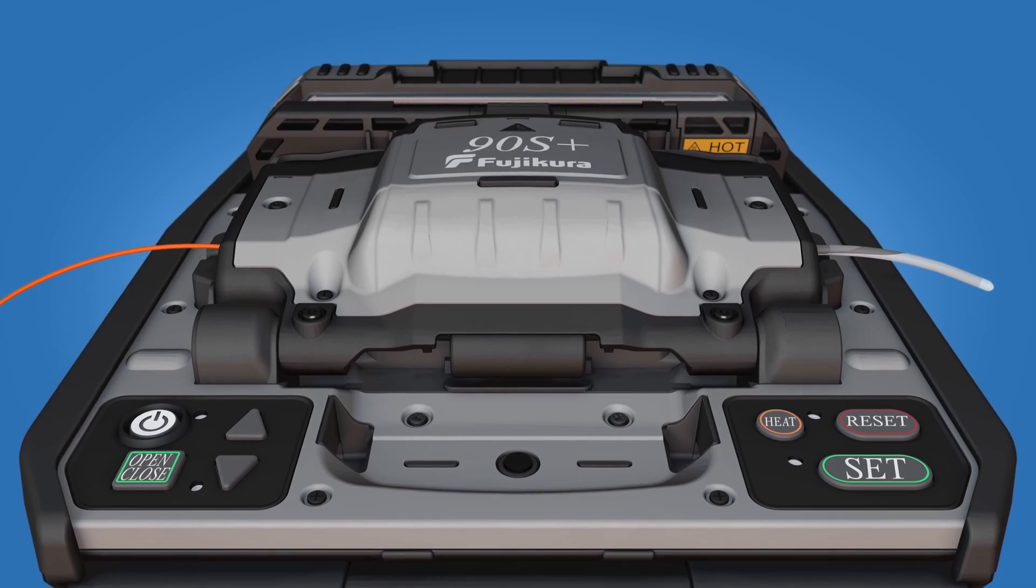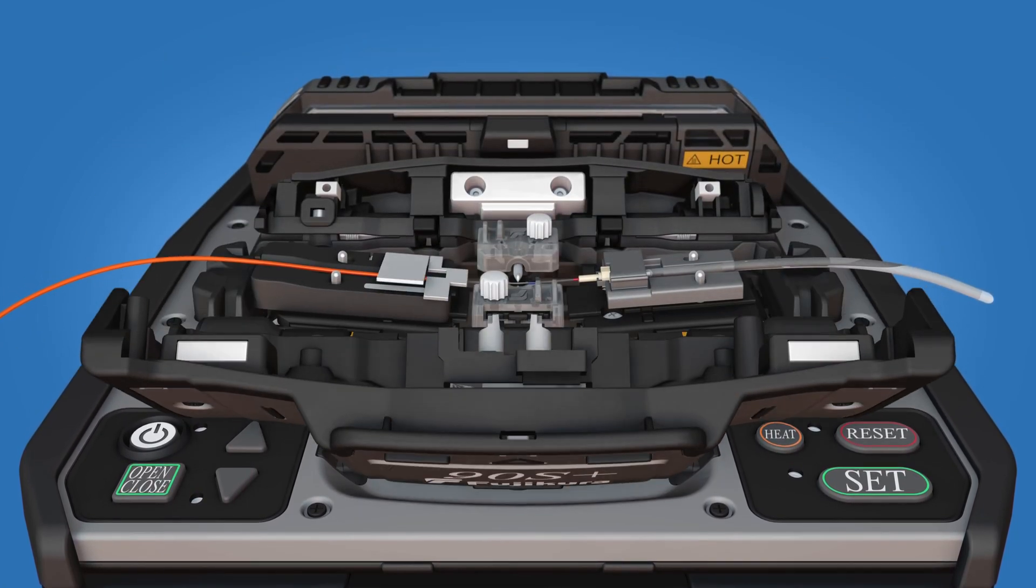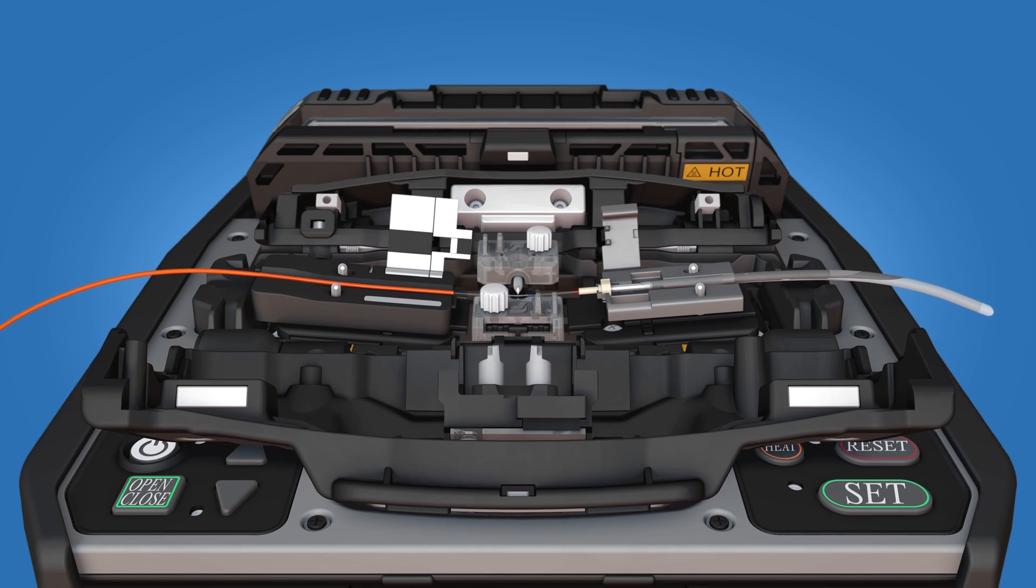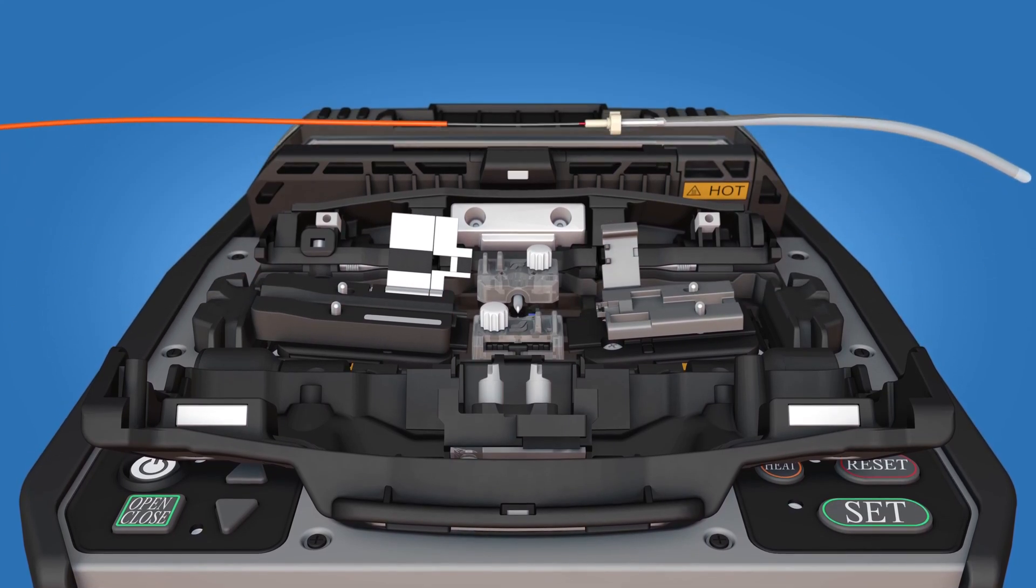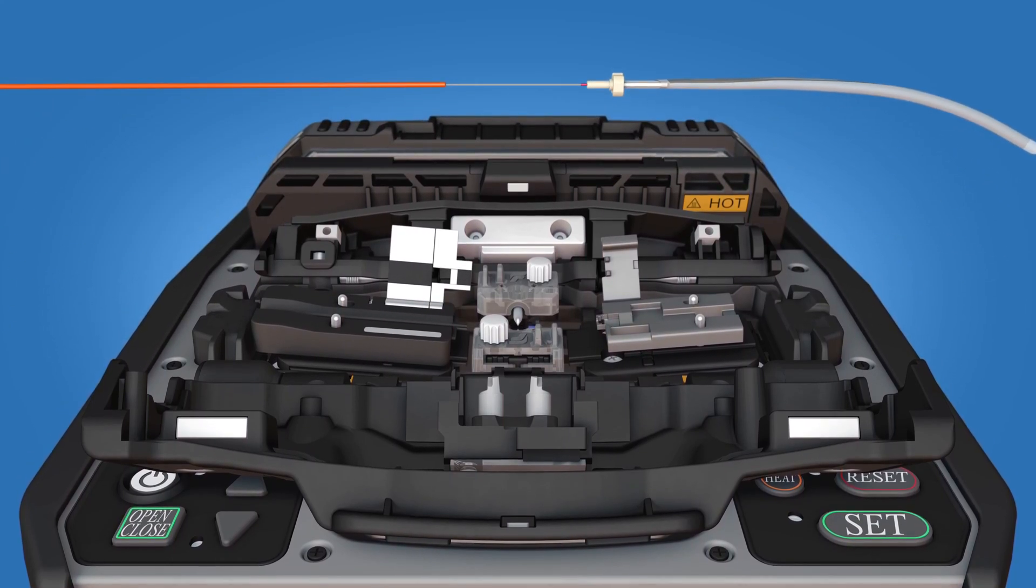Once the splicer has performed a tension test on the splice, open the fiber holder and ferrule unit holder clamps. Continue to keep tension on the splice while removing it from the fusion splicer.